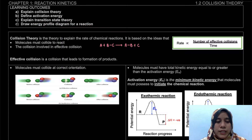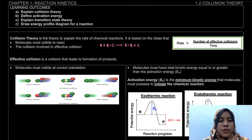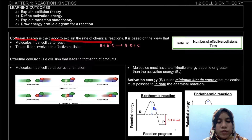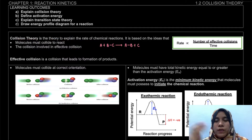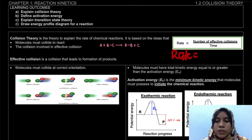So what is collision theory, the name of our subtopic? Collision theory is the theory used to explain the rate of chemical reaction. We have learned previously that rate is equal to change in concentration over time.